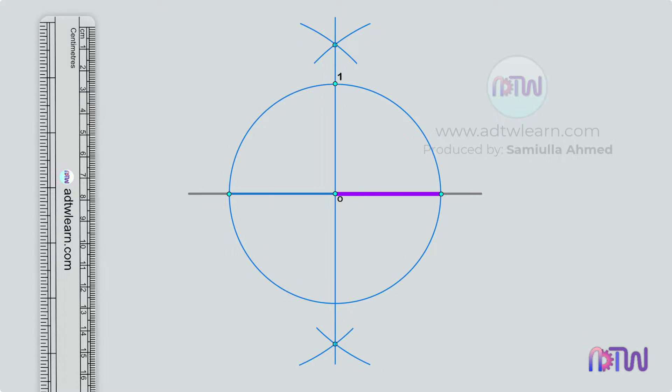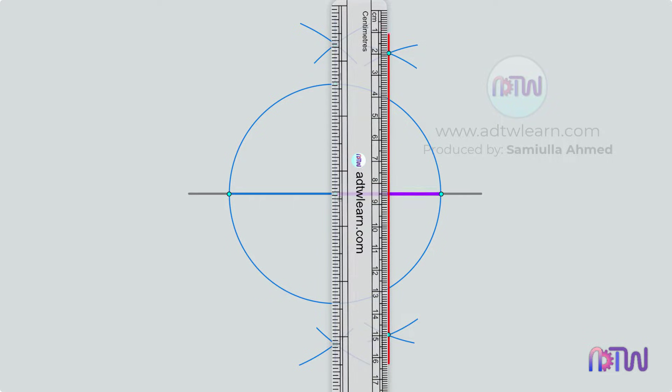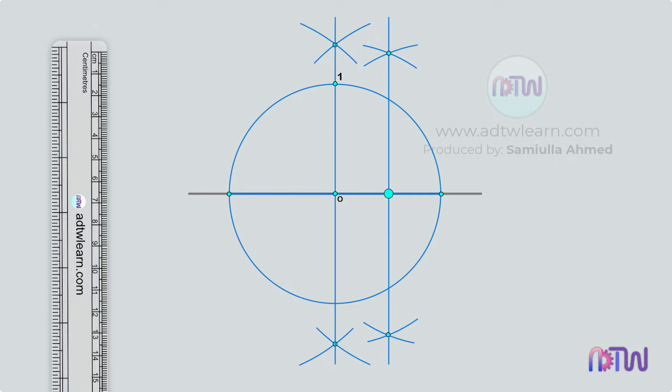Apply the middle point method, take a compass, take some length and draw arcs using these points as a center. Draw a line passing through these points and name this point as F.